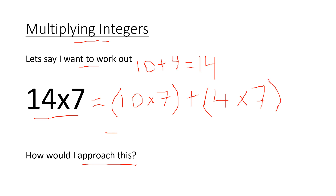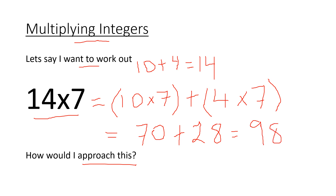...add 4 times 7. So 10 times 7 is 70, and 4 times 7 is 28. So 70 plus 28 gives us 98 — that's the answer to that question. Of course I can do it the traditional way: short multiplication. 4 sevens are 28, so 8 carry the 2; 7 ones are 7 plus 2 is 9. So that's another way of doing it.